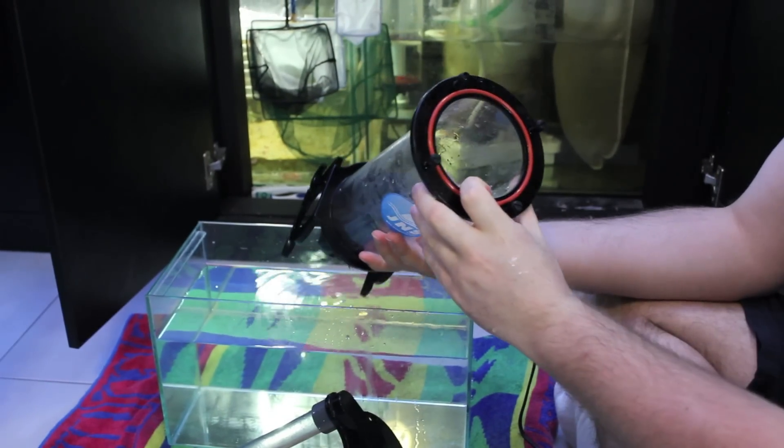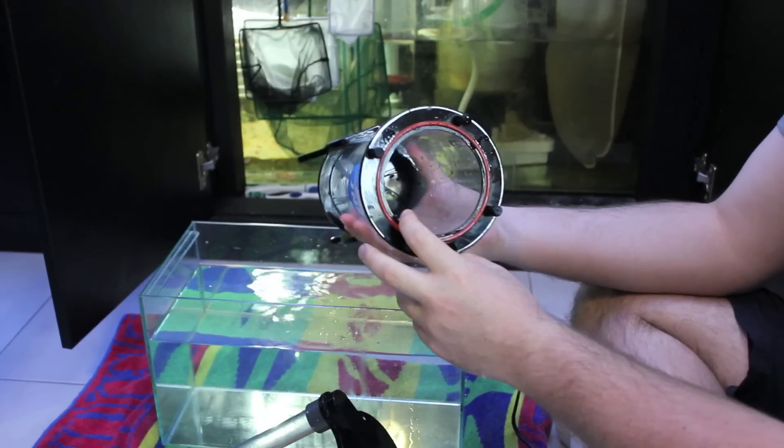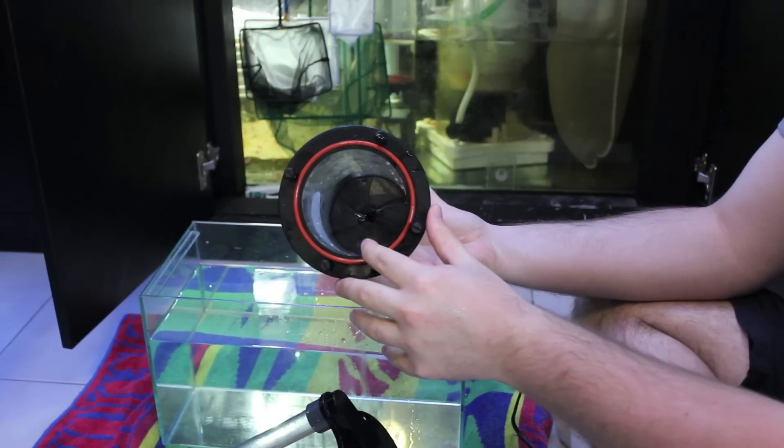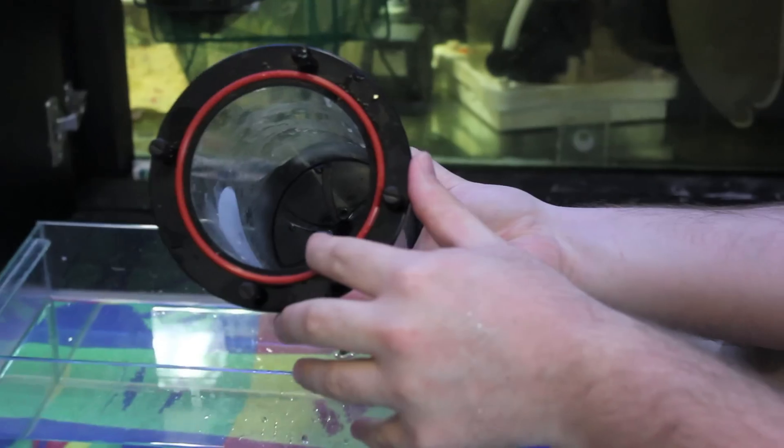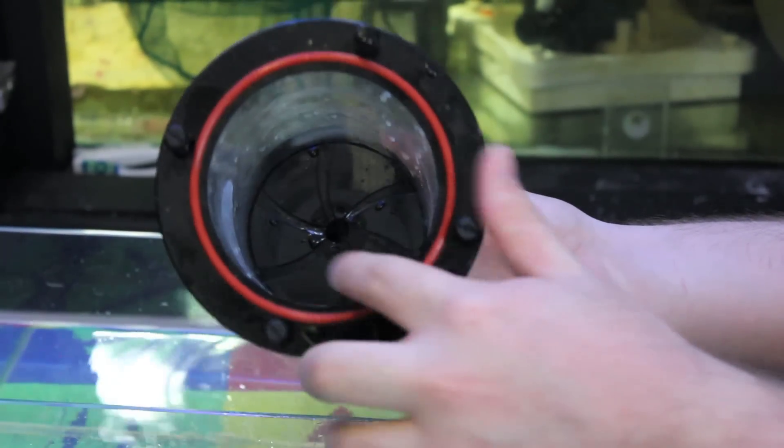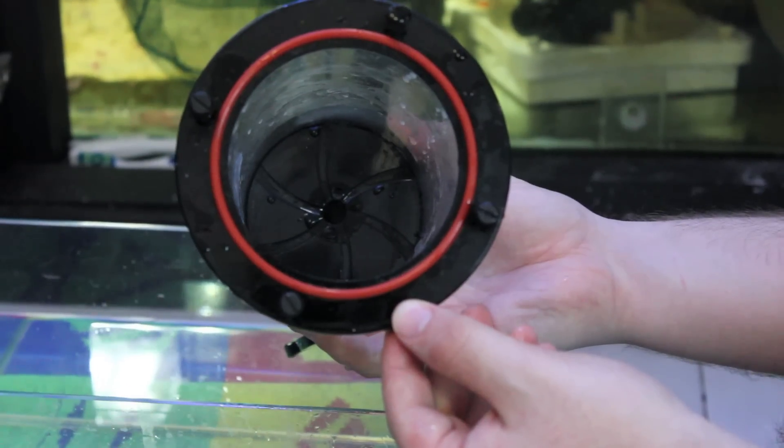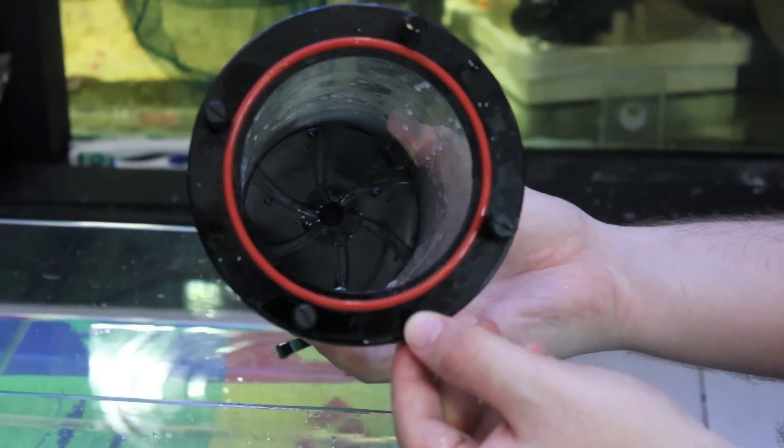The next thing that I've noticed since running the reactor is you can see inside here there's a twirling motion there. That is most likely what creates its vortex motion.